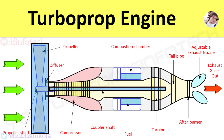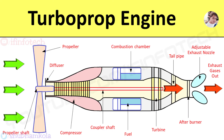The propeller creates 80 to 90 percent of thrust, while gases leaving the exhaust nozzle contribute 10 to 20 percent of thrust. The diffuser plays an important role in allowing entry of air, converting kinetic energy into pressure energy. The fuel used is paraffin oil or kerosene oil.